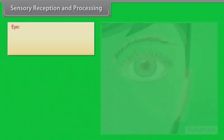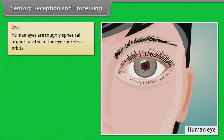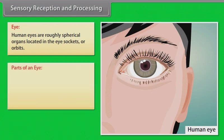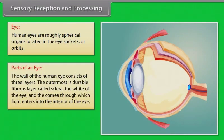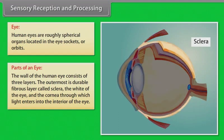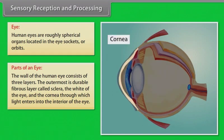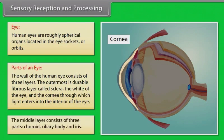Human eyes are roughly spherical organs located in the eye sockets or orbits. The wall of the human eye consists of three layers. The outermost is a durable fibrous layer called the sclera — the white of the eye — and the cornea, through which light enters into the interior of the eye.